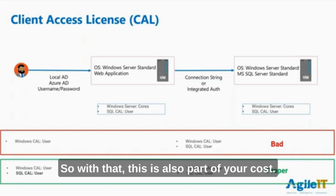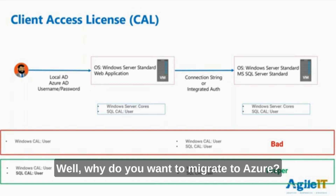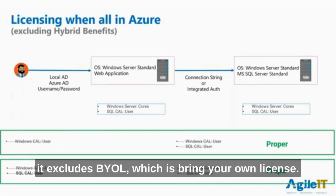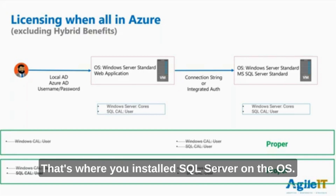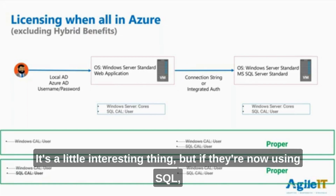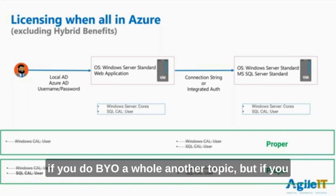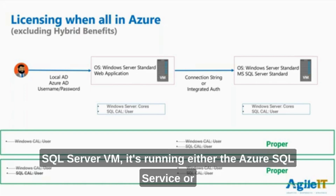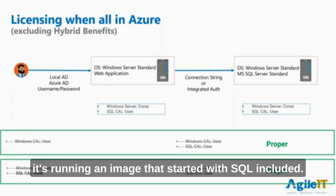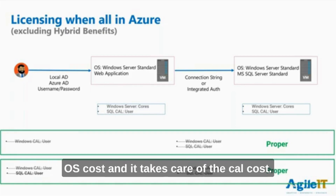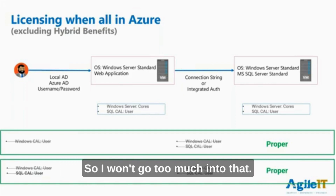So with that, this is also part of your cost. You might ask, what do I do now? Well, why do you want to migrate to Azure? Because one of the benefits is that when you do licensing — and this excludes hybrid benefits and BYOL (bring your own license), where you install SQL Server on the OS, whether Windows or Linux — if you move their database and this VM is running in Azure, either as the Azure SQL service or as an image that started with the OS with SQL included, it takes care of the OS cost and the CAL cost.